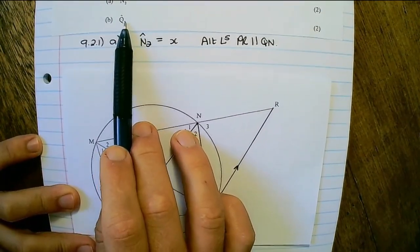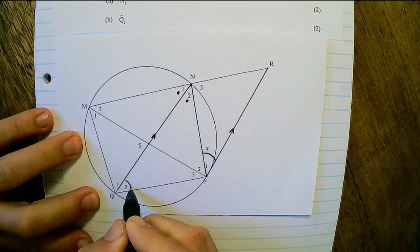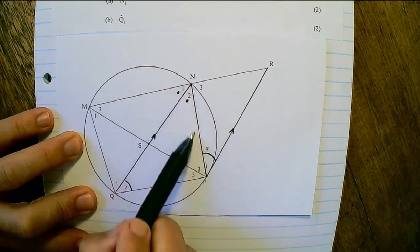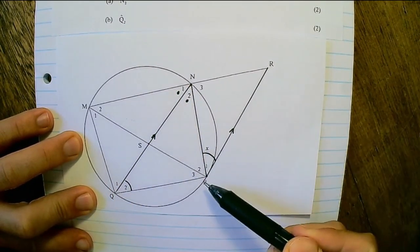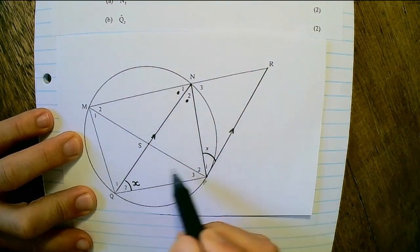The next question is the angle size of Q2. So here we have Q2 and it is connected to the chord NP and if this is the tangent then Q2 would also be equal to X tan-chord.